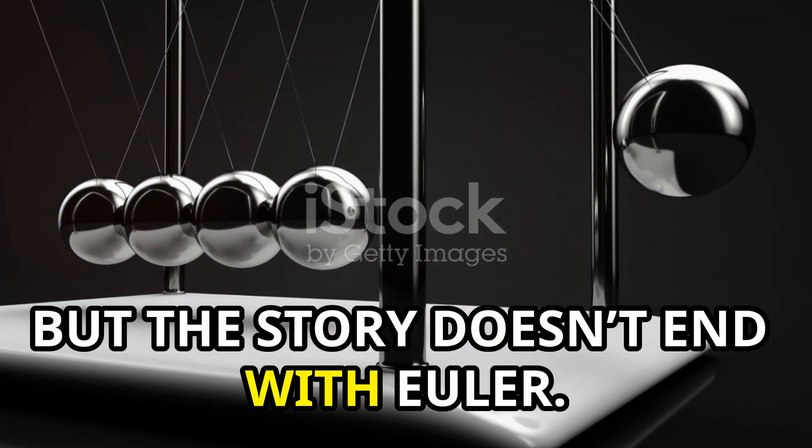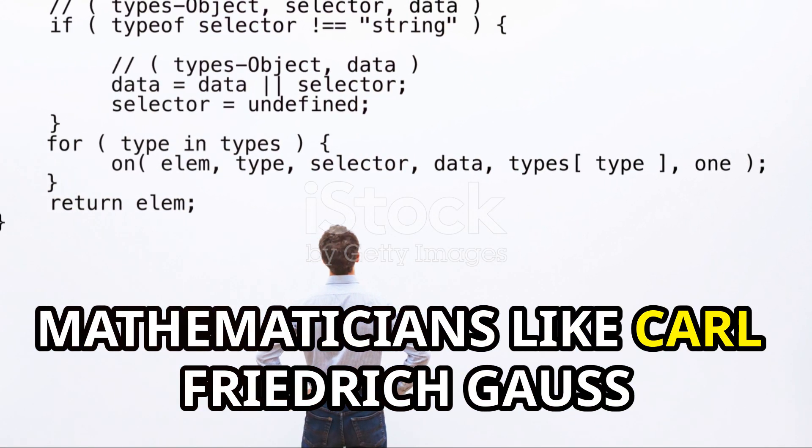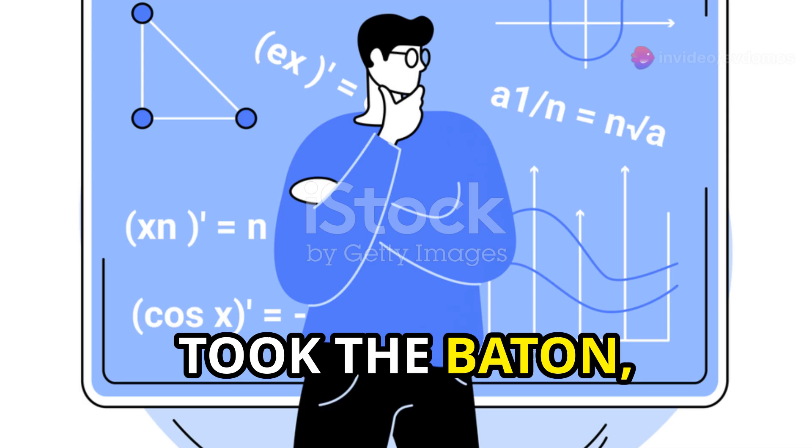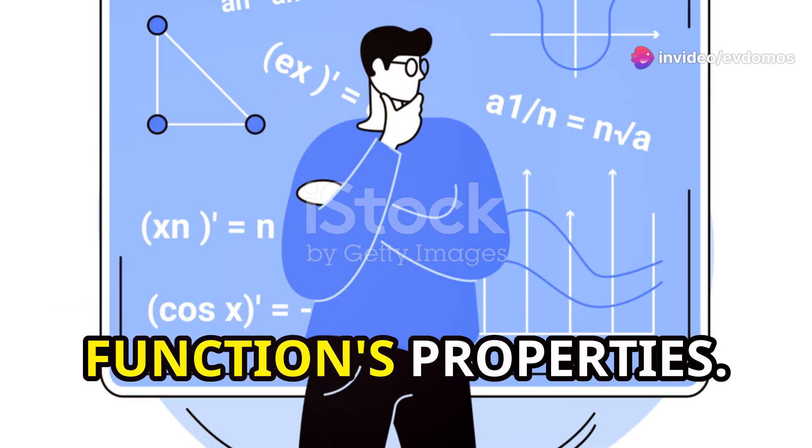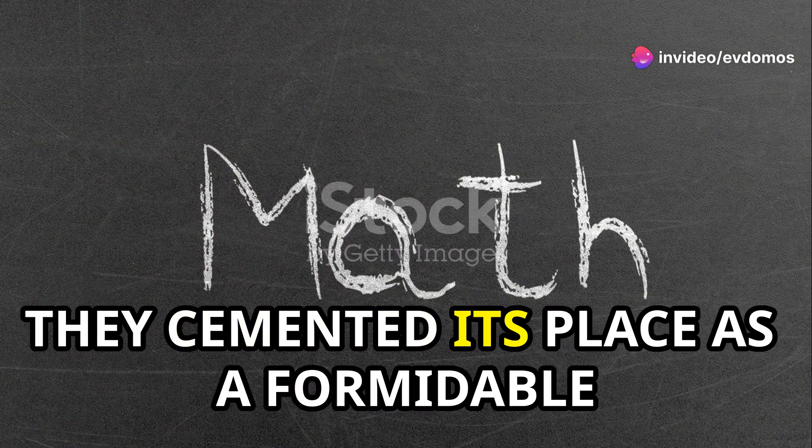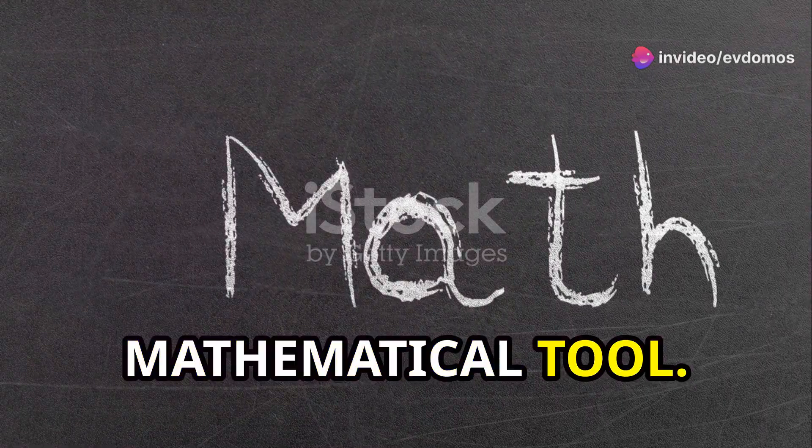But the story doesn't end with Euler. Mathematicians like Carl Friedrich Gauss took the baton, refining and extending the gamma function's properties. They cemented its place as a formidable mathematical tool.